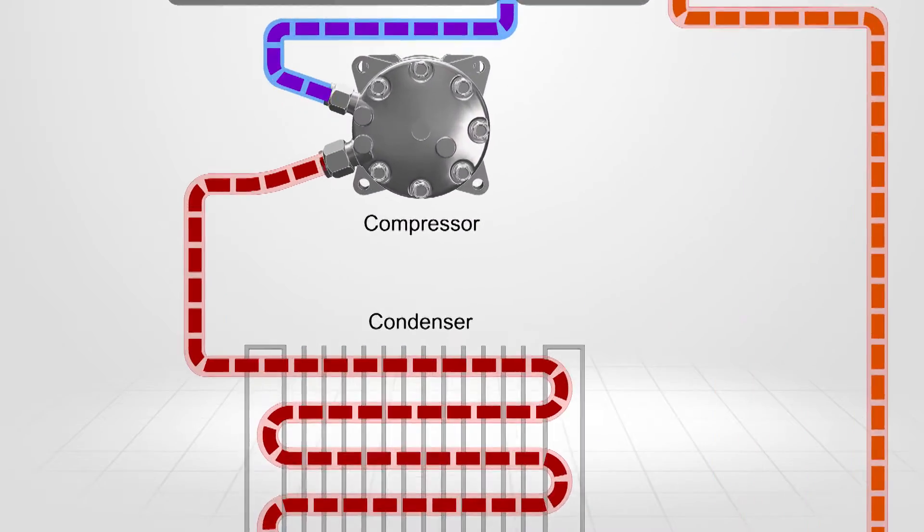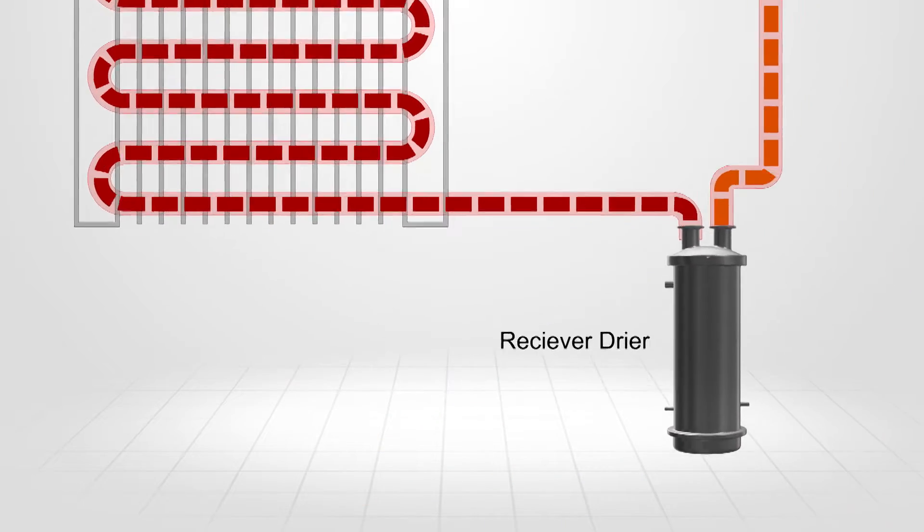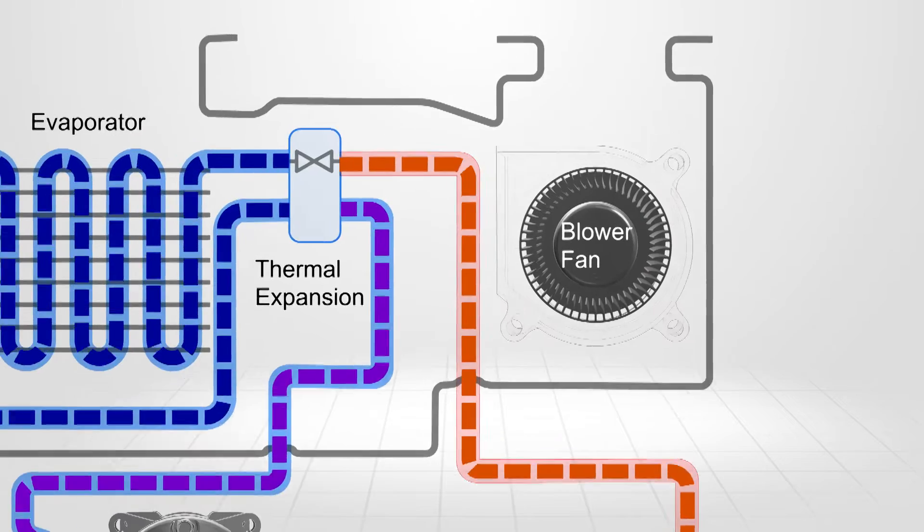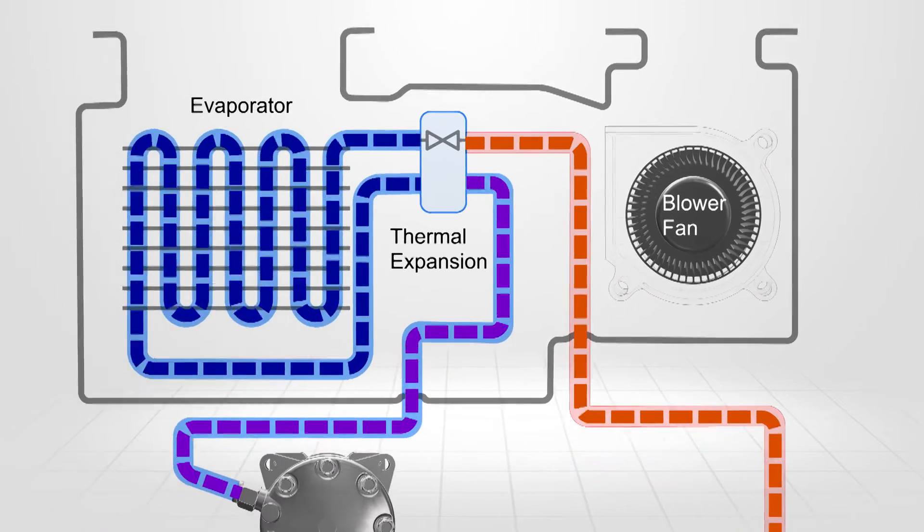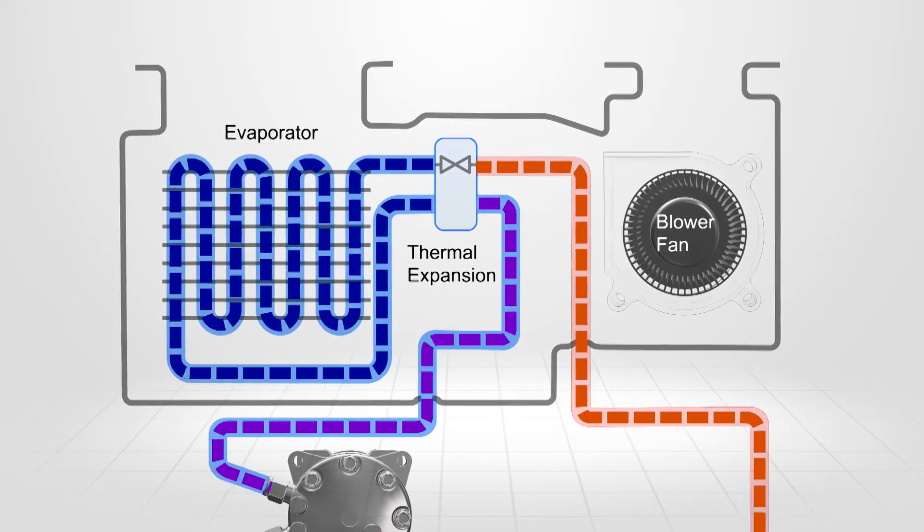Refrigerant is compressed and passed through a condenser, receiver drier filter before reaching a flow control device. This device may be a thermal expansion valve or fixed orifice tube.